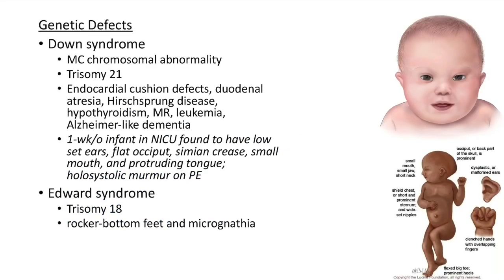First let us discuss about genetic defects. Down syndrome is the most common chromosomal abnormality; it is due to trisomy 21. This picture shows a case of Down syndrome — note the flat face, epicanthal folds, and wide-set eyes. It is associated with endocardial cushion defects, duodenal atresia, Hirschsprung disease, hypothyroidism, and mental retardation.